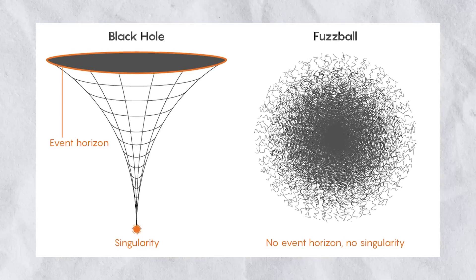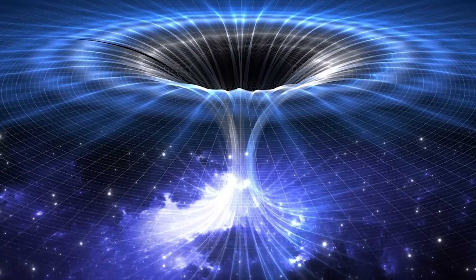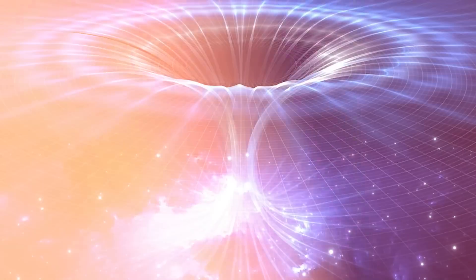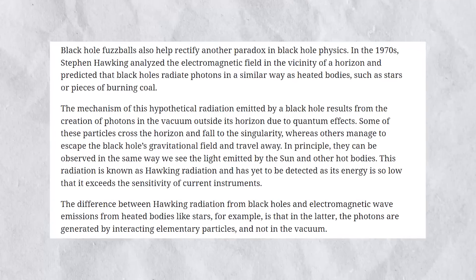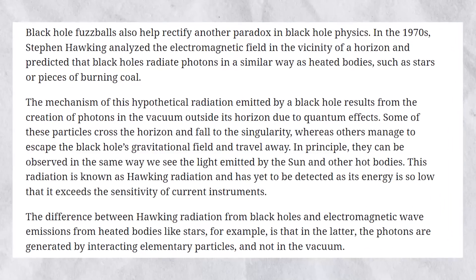In this model, the event horizon is replaced by a fuzzball surface that encodes all the information about the matter that fell into the black hole. The fuzzball hypothesis is still being developed and studied, but it has the potential to provide a resolution to the black hole information paradox.